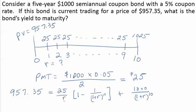We cannot solve for this R algebraically, so we have to use the financial calculator to get the yield to maturity of a coupon bond.